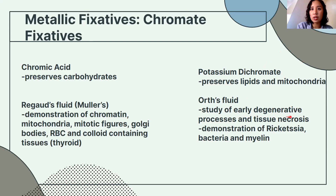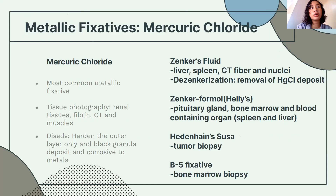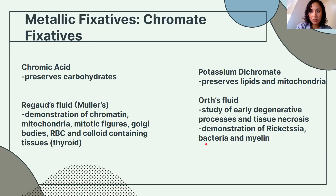Orange fluid fixative is used for the study of early regenerative processes, tissue necrosis, and for Rickettsia. Note: Rickettsia is spelled with double T and single S. For metallic fixatives overall, all except Heidenhain produce black granular artifacts due to mercury chloride.